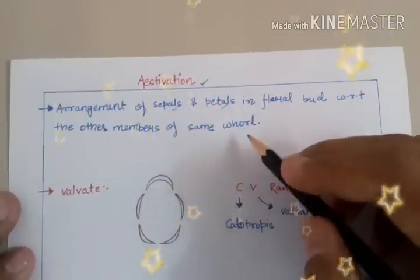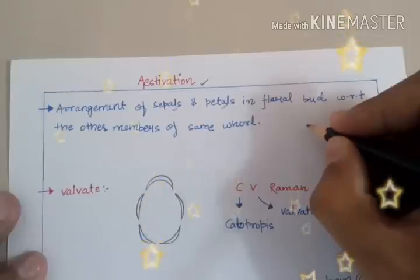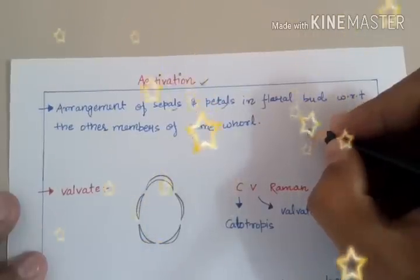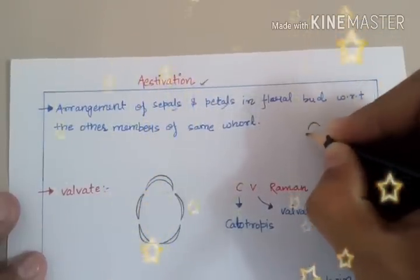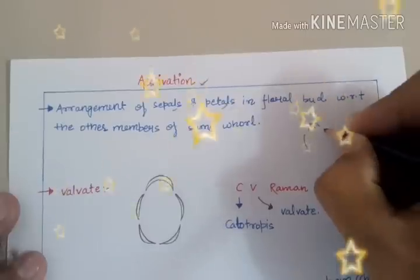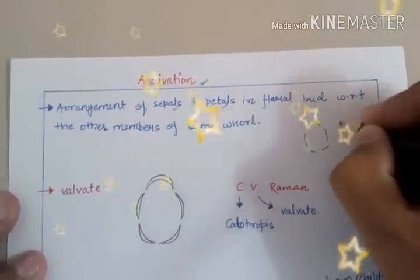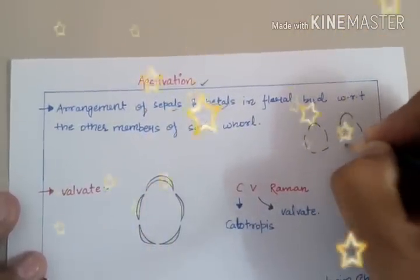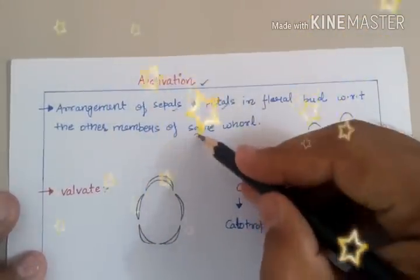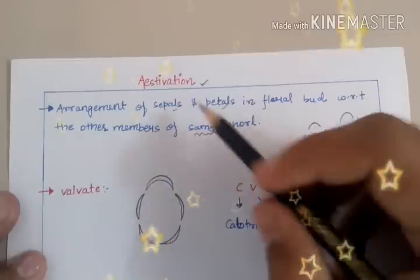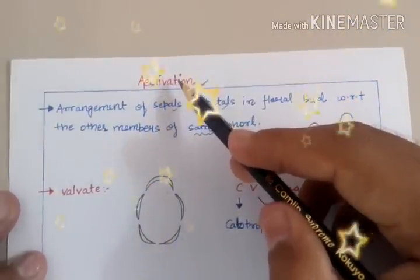What this particular statement means is that in Estivation we are learning about the arrangement of sepals with respect to other sepals, or the arrangement of petals with respect to other petals — that is, the same whorl. This is known as Estivation.